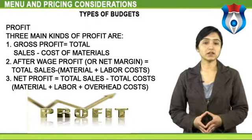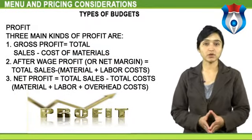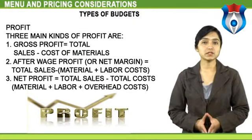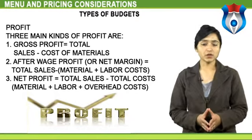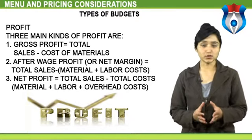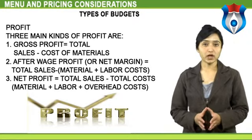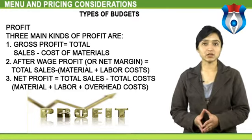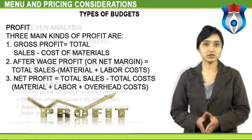Three main kinds of profit are referred to in food and beverage operations: gross profit equals total sales minus cost of materials; after-wage profit or net margin equals total sales minus material plus labor costs; and net profit equals total sales minus total costs — that is, material plus labor plus overhead costs.